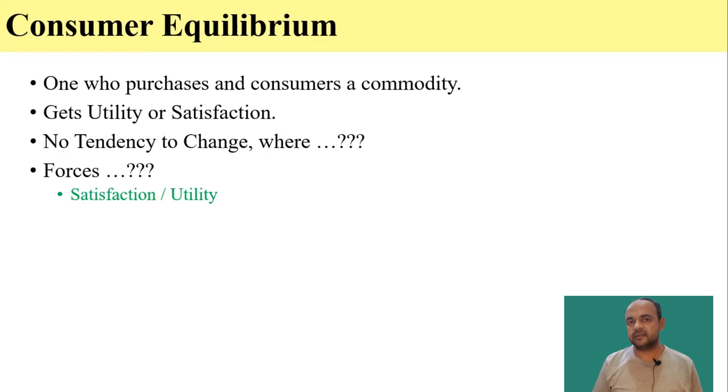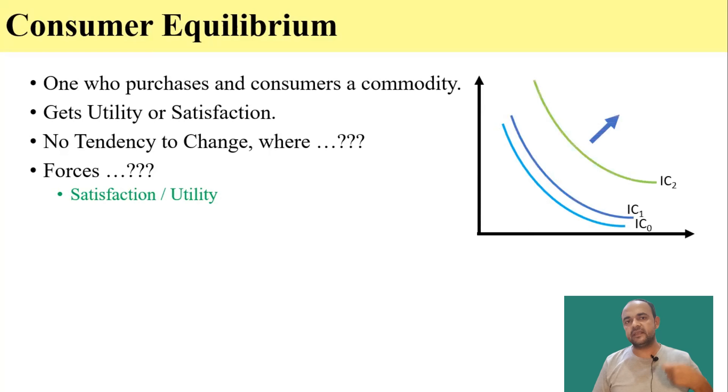We know that the satisfaction of the consumer or utility is represented by indifference curves and higher the indifference curves, higher is the utility. So what is the other force? The other force that is stopping consumer from going to the highest possible indifference curve is consumer's purchasing power represented by the budget line.